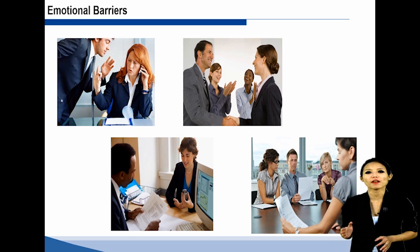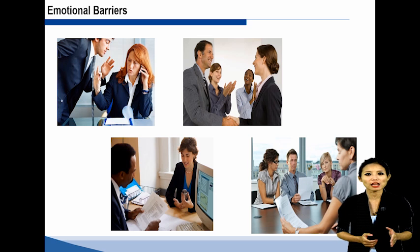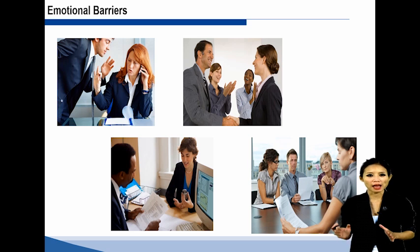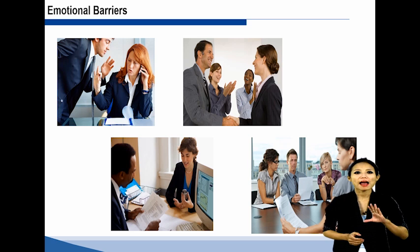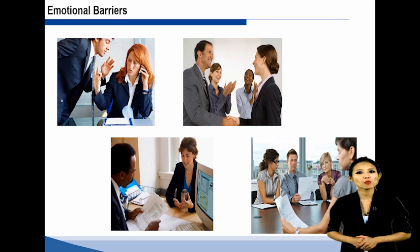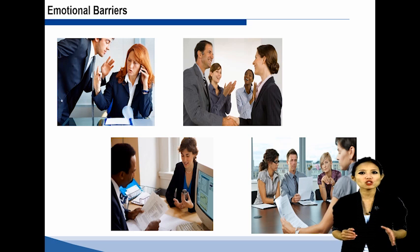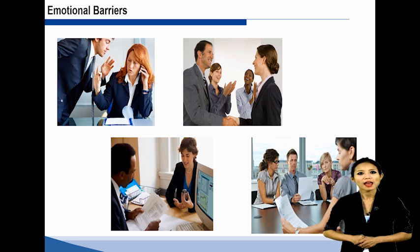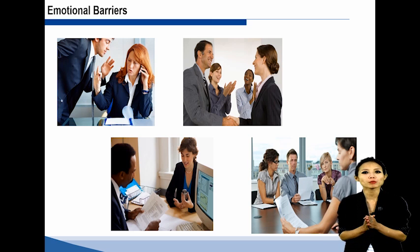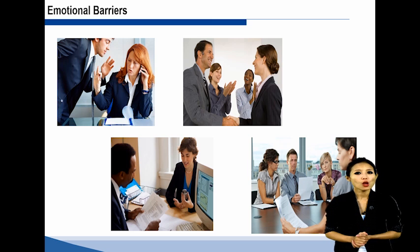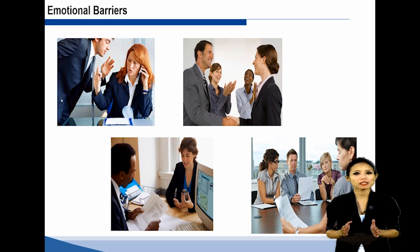Emotional barriers: Emotional state at a particular point in time also affects communication. If the receiver feels that the communicator is angry, he interprets the information being sent as very bad, while he takes it differently if the communicator is happy and jovial. One of the chief barriers to open and free communication is the emotional barrier, comprised mainly of fear, mistrust, and suspicion. The roots of our emotional mistrust lie in childhood when we were taught to be careful what we said to others. As a result, many people hold back from communicating their thoughts and feelings, and excessive fear of what others might think can stunt our development as effective communicators.